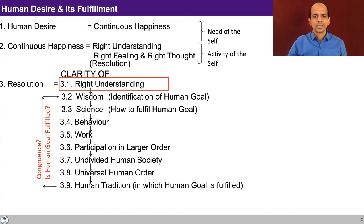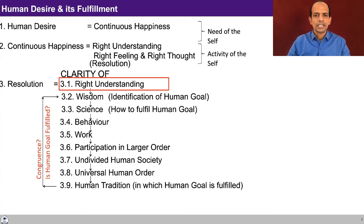Recapitulating what we had started discussing: the human desire is continuous happiness, which is the need of the self, and it is equated to right understanding, right feeling and right thought. This right understanding, and right feeling and right thought based on right understanding, is something called resolution. When we look at resolution, there are nine components of it. So far we talked about right understanding of human being, then right understanding of existence, and now we are going to talk about right understanding of the role of human being in this existence.